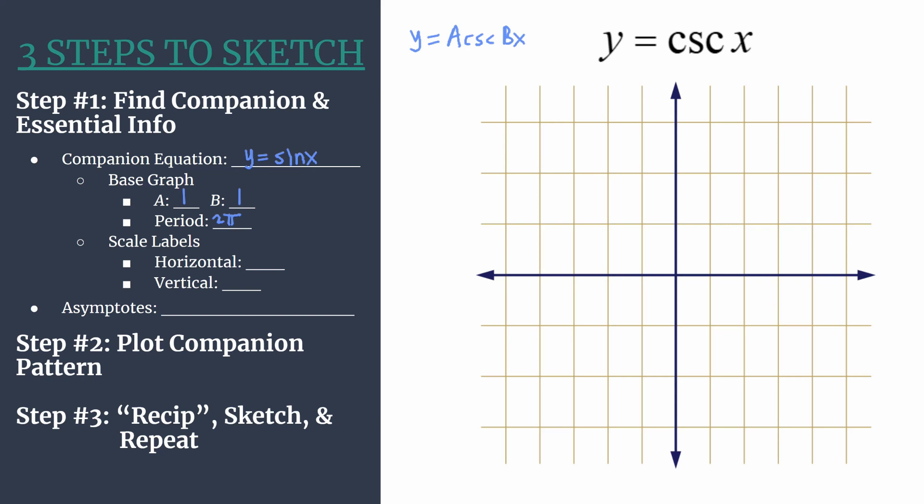Now let's decide on some scale labels. We choose our horizontal scale label intentionally so that when we plot our companion pattern, all the points align nicely with our horizontal tick marks. Take the period and divide by 4. So 2π divided by 4 is π over 2, and that's how we'll count to label our horizontal axis. For our vertical axis, we'll use 1.